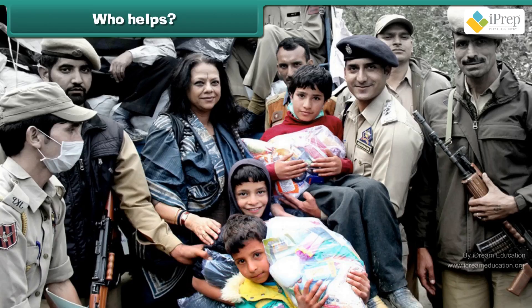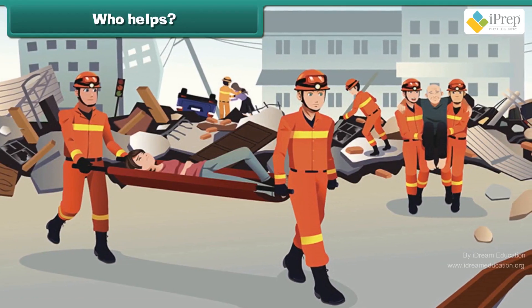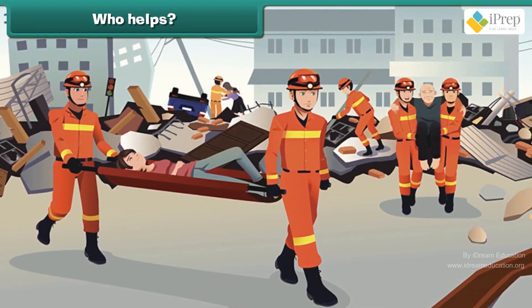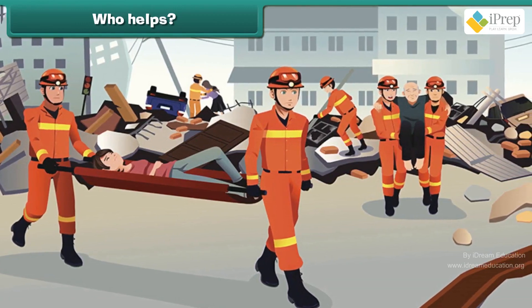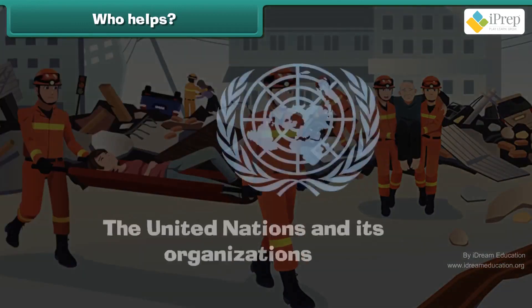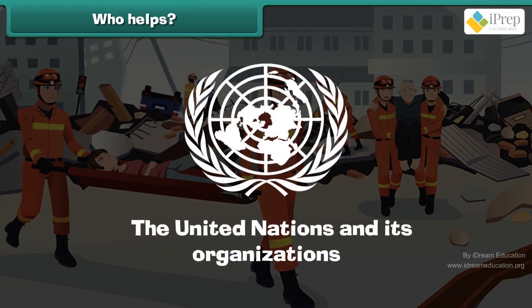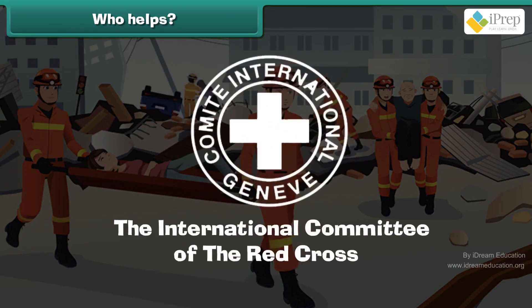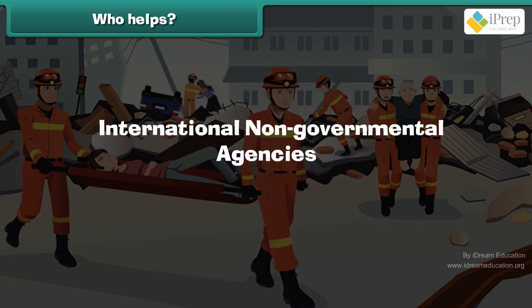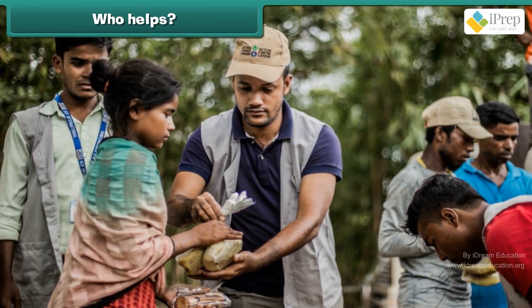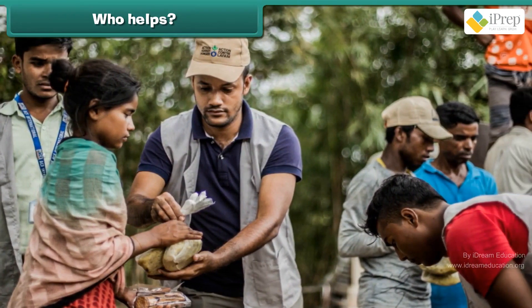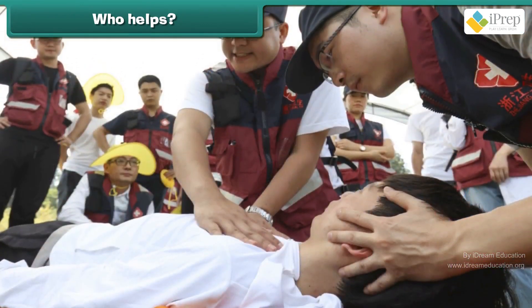Many governments and NGOs come voluntarily to help the people affected by natural disasters. Some of them are: the United Nations and its organizations, the International Committee of the Red Cross, international non-governmental agencies, and national organizations. They provide food, shelter, clothes, and health care to the affected people.